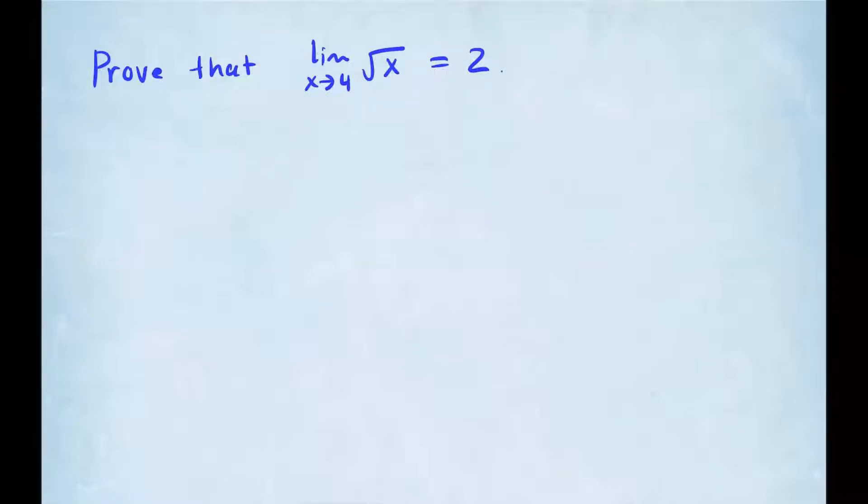Hi everyone, thank you for watching. So in this video we're going to be proving that the limit of square root of x as x approaches 4 is 2 using the epsilon-delta definition.